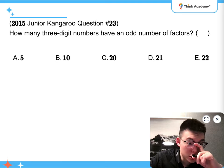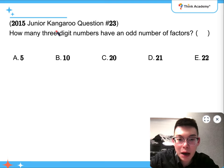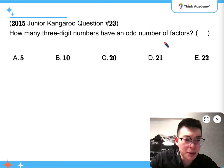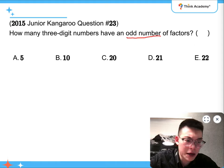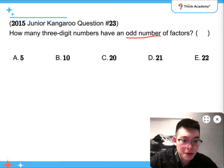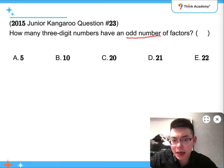And then for question 23, how many three-digit numbers have an odd number of factors? That's a number theory question. So first of all, you need to know what numbers have an odd number of factors. Factors come in pairs, right? So how would it be an odd number?